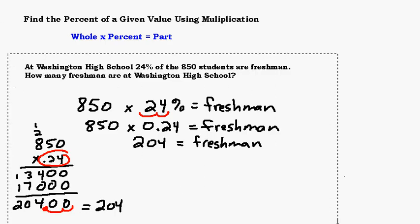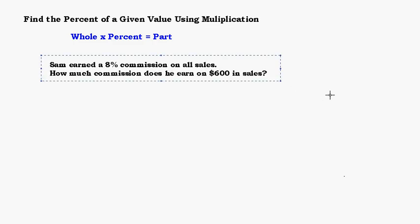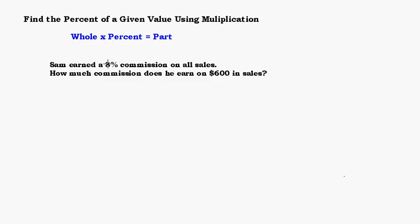Let's try another example. This is a common way that people get paid — sometimes in addition to their regular salaries and sometimes not. Sam earned an 8% commission on all sales. How much commission does he earn on $600 in sales? If you think you know how to do that, pause the video and give it a try, then start it up when you're ready.